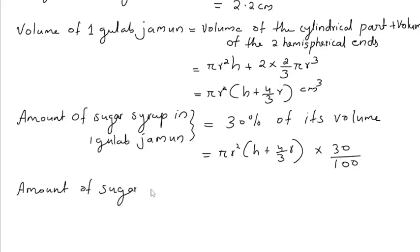Amount of sugar syrup in 45 gulab jamuns is equal to 30% of the volume of one gulab jamun multiplied by 45.